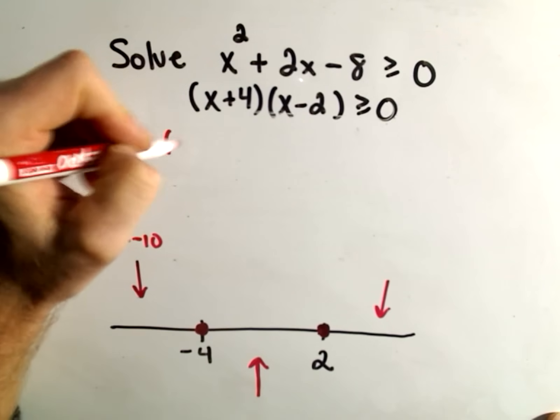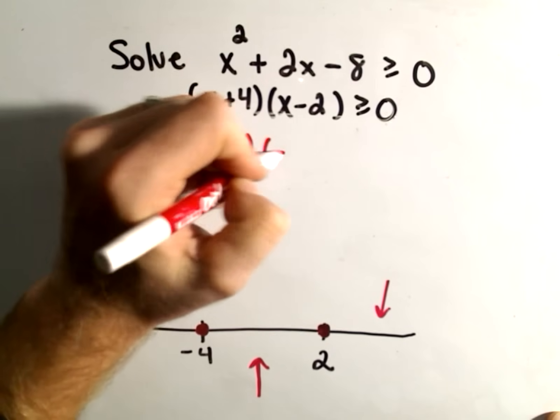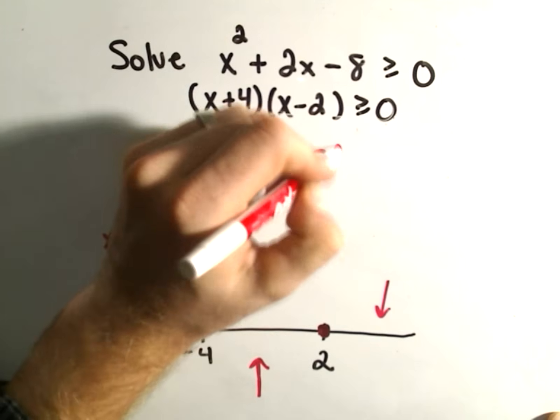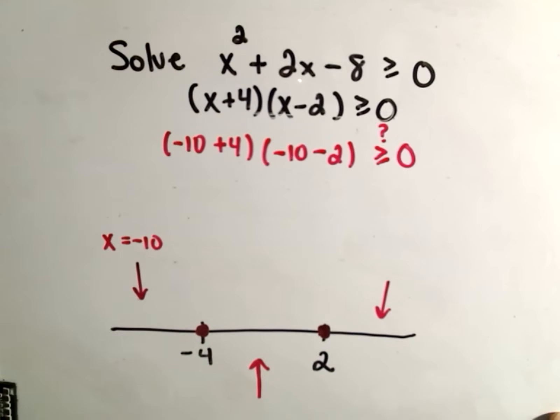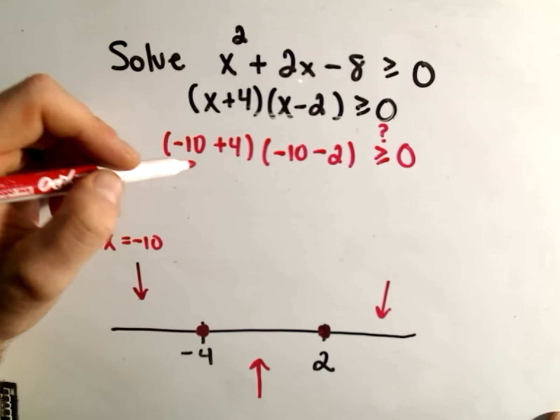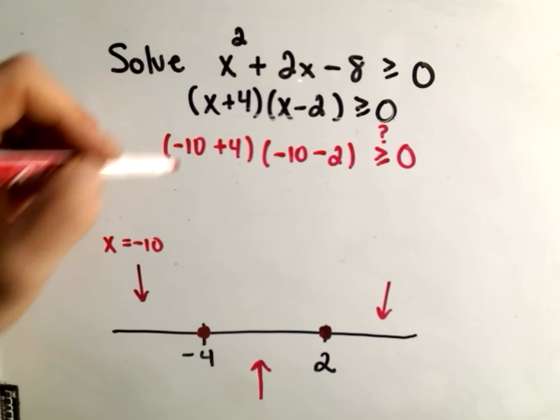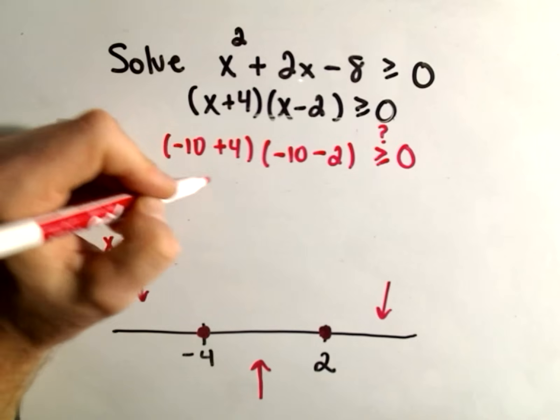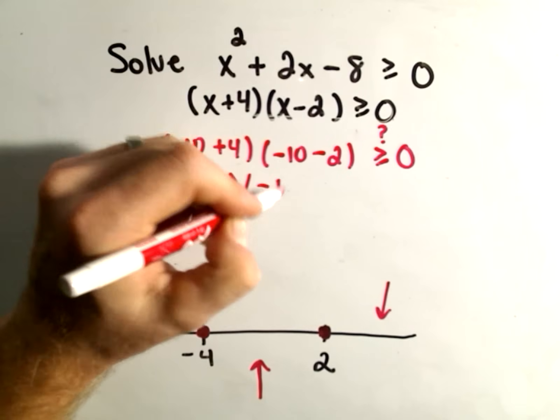So I'll get negative 10 plus 4, and then I'll get negative 10 minus 2. And I'm asking myself, is this greater than or equal to 0? If it is, that means every number is smaller than negative 4 works. So negative 10 plus 4 is negative 6. Negative 10 minus 2 is negative 12.